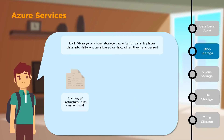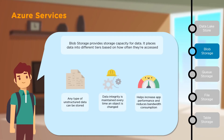Next, we have Blob Storage, which provides storage capacity for data. Depending on how often particular data is used, it is classified into different tiers. All the data within Blob Storage is unstructured data. It ensures data integrity is maintained every time a particular object is changed or accessed, and it also helps improve app performance and reduces bandwidth consumption.